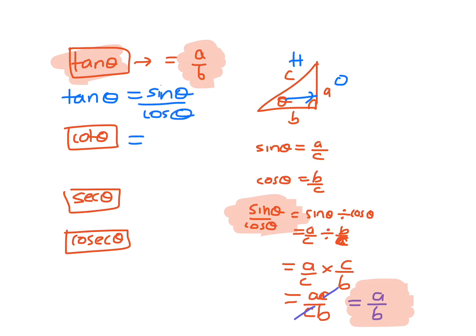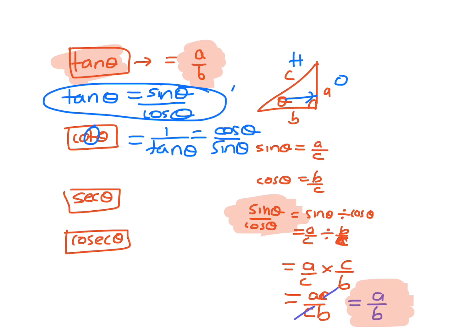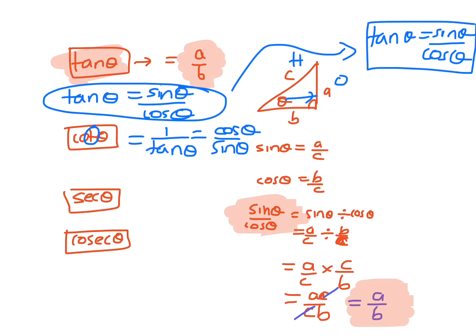Now cot θ — cot θ is one on tan θ, it's just a reciprocal if you go to the third letter. So cot θ is cos θ on sine θ, because you just flip tan θ. A good way of remembering it: if you want to get a tan, you need to go in the sun — that's sine — with your cosies on the bottom. And cot: go to the third letter, that's tan, reciprocal that and you get cos on sine.